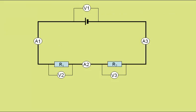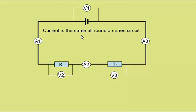Applying Kirchhoff's first law to this simple circuit, any current leaving the power supply here must pass through ammeter 1, resistor 1, ammeter 2, resistor 2, ammeter 3, and come back to the power supply. So the current is the same all the way around a series circuit, and ammeter 1 is the same as ammeter 2 and the same as ammeter 3.